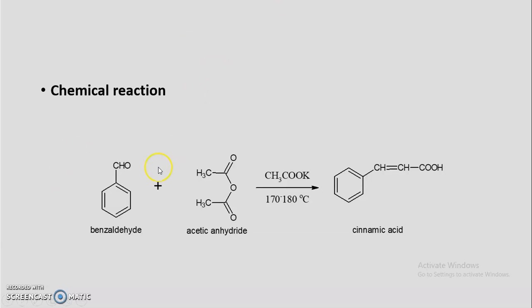The chemical reaction involved in this synthesis involves the reaction of benzaldehyde with acetic anhydride in presence of potassium acetate to form cinnamic acid. The condensation of aromatic aldehydes — benzaldehyde is known as the aromatic aldehyde — with acid anhydrides, that is acetic anhydride, in presence of sodium or potassium salt of the acid corresponding to the anhydride, gives an alpha-beta unsaturated acid. This is known as the Perkin reaction.